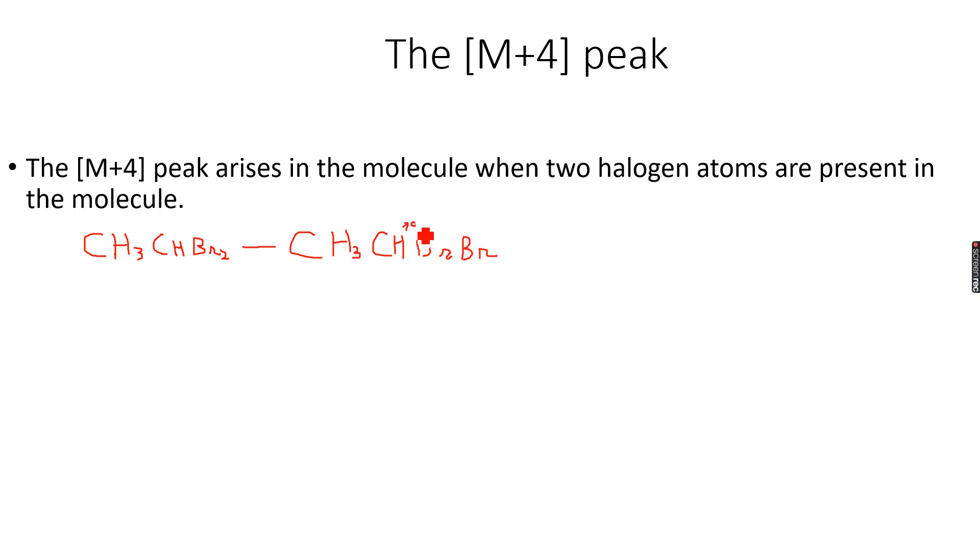Let's take the first case in which both are the lighter isotopes of bromine, so both are Br-79. This gives me my M peak. Then I have CH₃CH with Br-81, Br-81. In this case I have both heavier isotopes, so this gives me my M+4 peak, because the difference between the molecular masses of these two molecules is four atomic mass units.